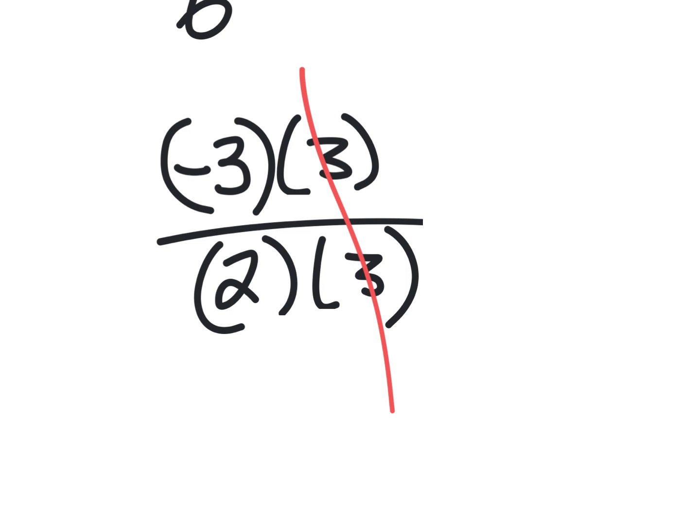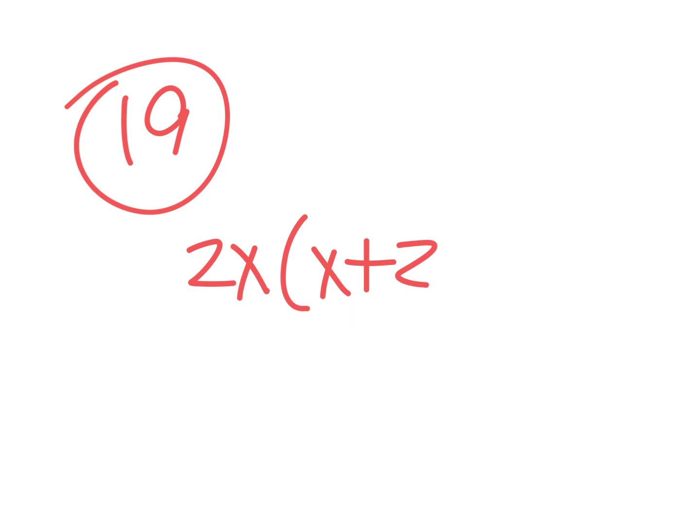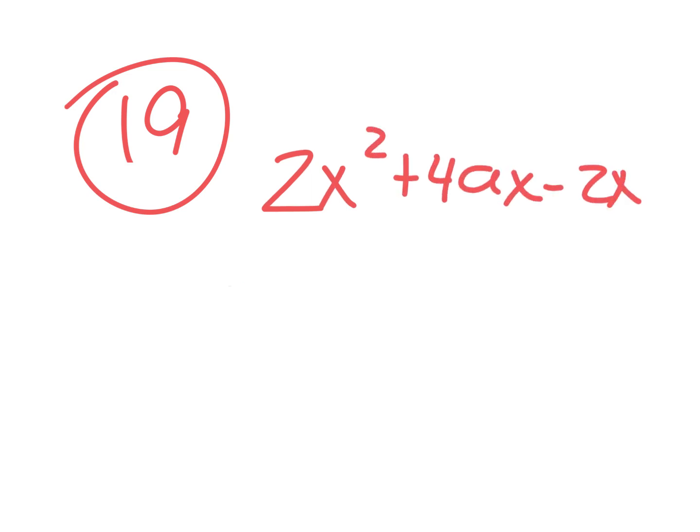There's a lot of ways to factor. This is just one of them. A lot of people get stumped on the one called GCF. Which is the problem that says GCF on it? Number 19. Would you read me 19, please, sir, in the front row? 2X parentheses X plus 2A minus 1 parentheses. Okay, you're giving me the answer. How about, give me the problem. 2X squared is 4AX minus 2X.